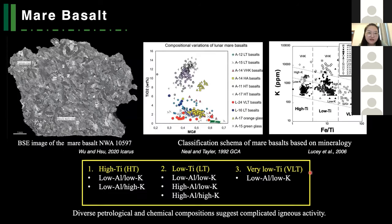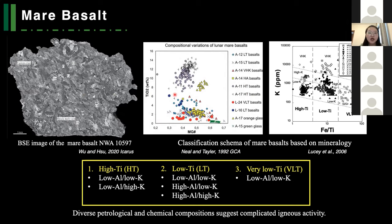Usually we do not classify mare basalts based on their texture. We classify them based on their chemistry. The distinction between different classes of basalt is based initially on titanium oxide content, and secondly on aluminum or potassium content. Most importantly, if we classify the mare basalts based on titanium content, we can relate the rocks to the chemical map observed from remote sensing techniques. So we can relate rock samples to their location on the lunar surface.